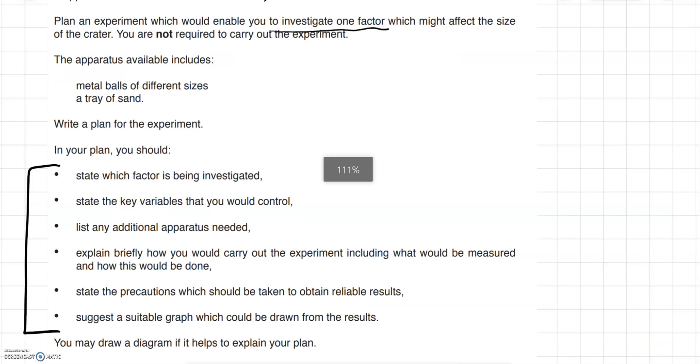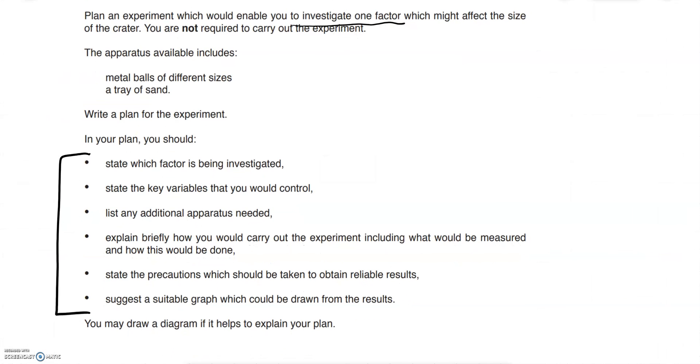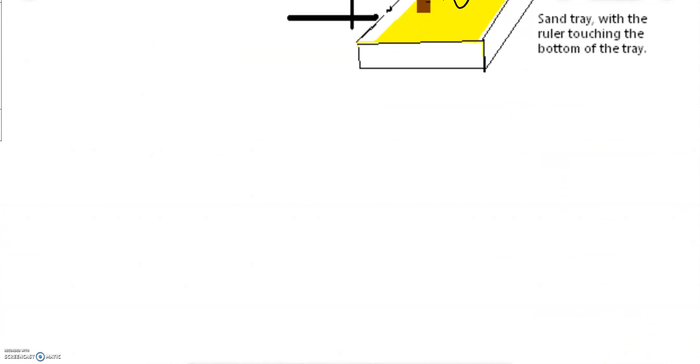So let's go back to our question. There's the checklist: state which factor is being investigated, we've decided on that one already, it's the mass of ball. State the key variables you control, we've done that already. Now listing any additional apparatus needed, so the only two that we've got are up here and straight away a big one should jump out. The next suggestion when you answer this question now is you've done your variables diagram, the next thing to have is your apparatus. In this case is a big one that we need is a ruler because we need to check that we drop it from the same height.